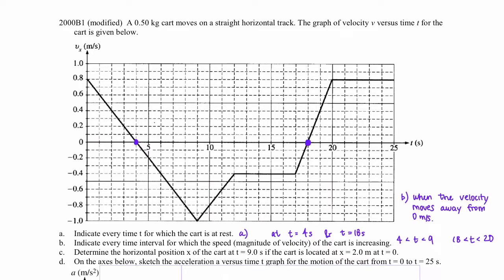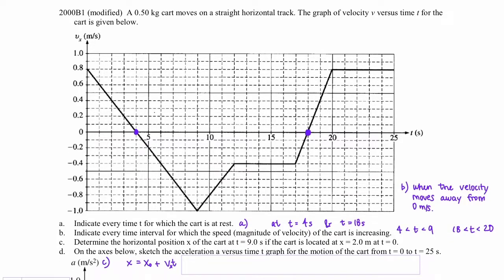Part c: determine the horizontal position x of the cart at t = 9 seconds if the cart is located at x = 2 meters at t = 0. We're going to use a kinematics equation — x equals x₀ plus velocity in the x direction times time — but since we don't have constant velocity, we need to calculate the area under the curve. On a velocity versus time graph, the area under the curve represents displacement. We have two segments to consider from 0 to 9 seconds.